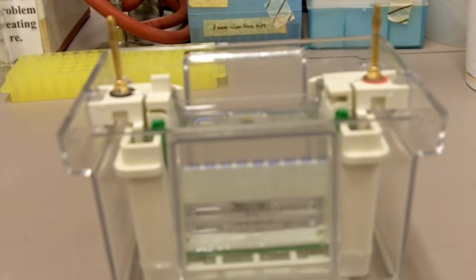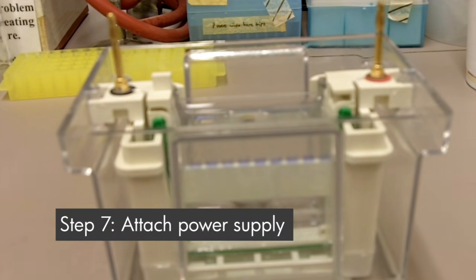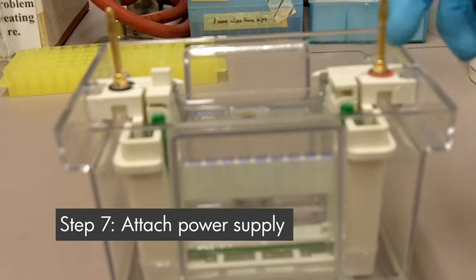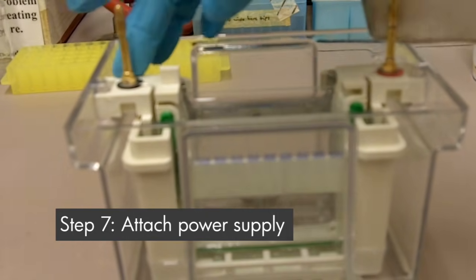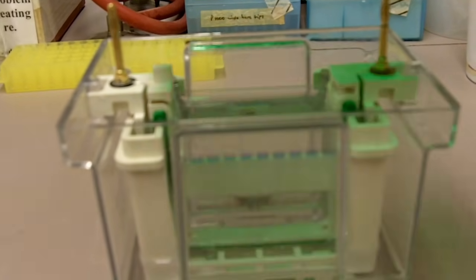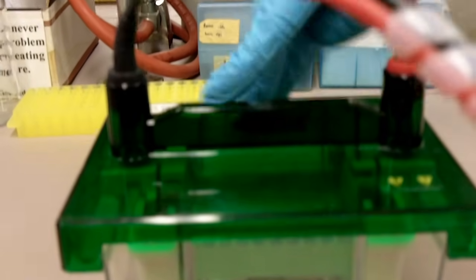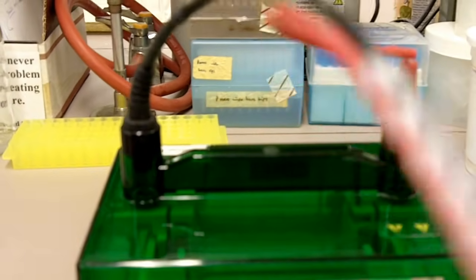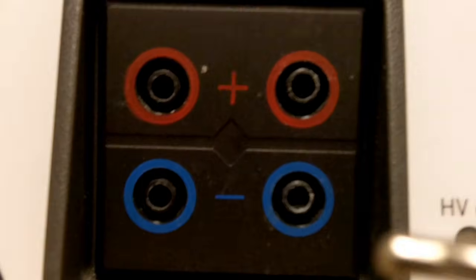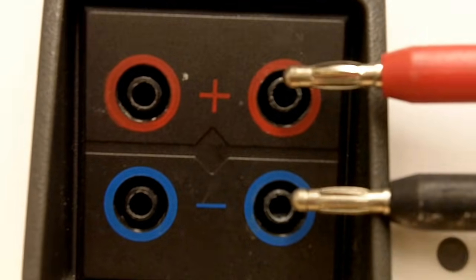After you pour in the buffer, it's time to hook up the tank to the power supply. As you can see right here, it has a red electrode and a black electrode. So you put on the lid like that, black to black, red to red. And then you hook up the power supply the same way. Red to red, black to black.